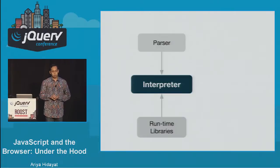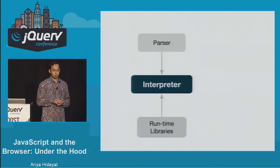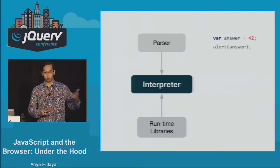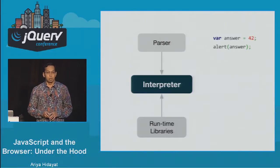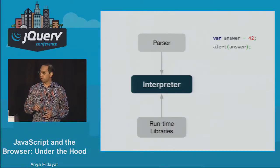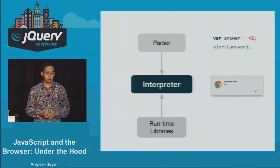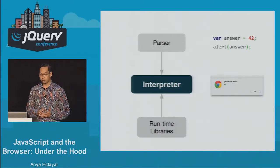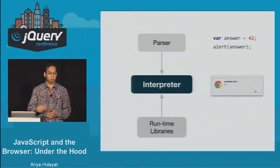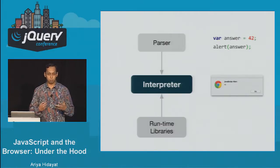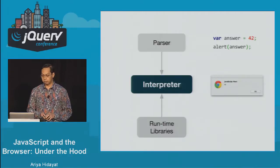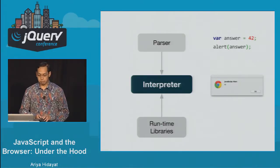The central piece of a JavaScript engine consists of three parts. The parser — this is the part that consumes your code. It parses it and produces a syntax tree. Then the interpreter will run that code and do something, in this case display an alert dialogue. In addition to those two modules, there are additional runtime libraries that serve as a big helper in many different cases.